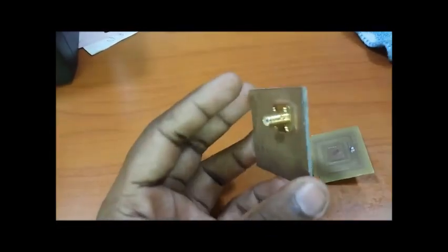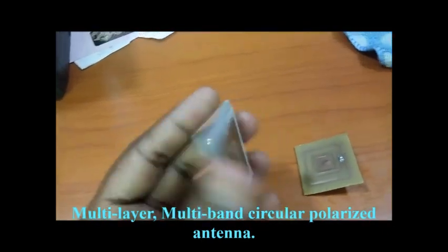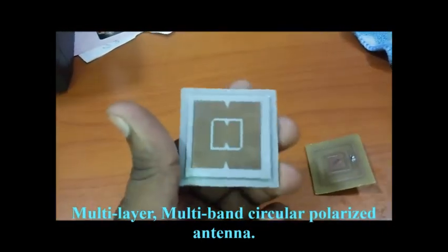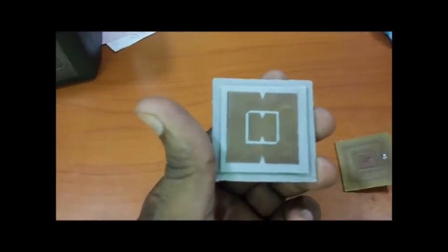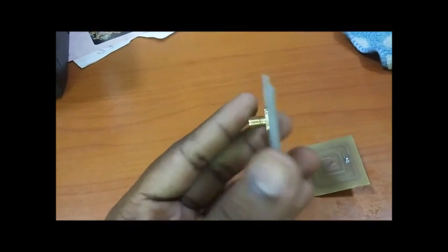And this is a dual layer antenna. This can resonate at two different frequencies and has better circular polarization in both of the resonances.